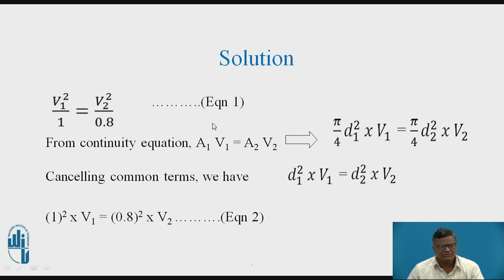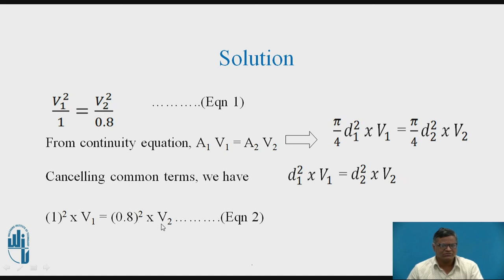From the continuity equation: A1·V1 = A2·V2, which gives (π/4)·D1²·V1 = (π/4)·D2²·V2. Cancelling π/4: D1²·V1 = D2²·V2. Substituting values: 1²·V1 = 0.8²·V2 — this is equation number 2. We now have two equations with two unknowns, V1 and V2. We can express either V1 in terms of V2 or V2 in terms of V1 and solve.